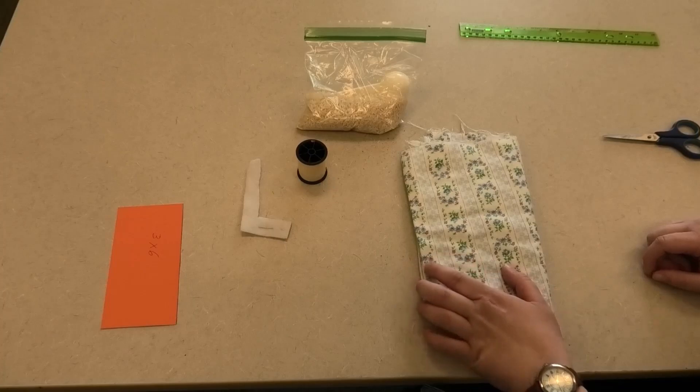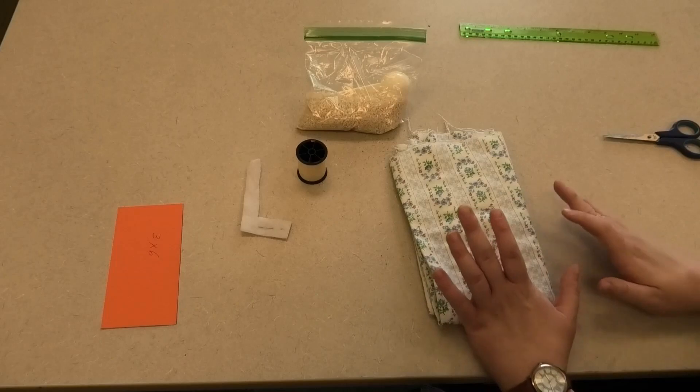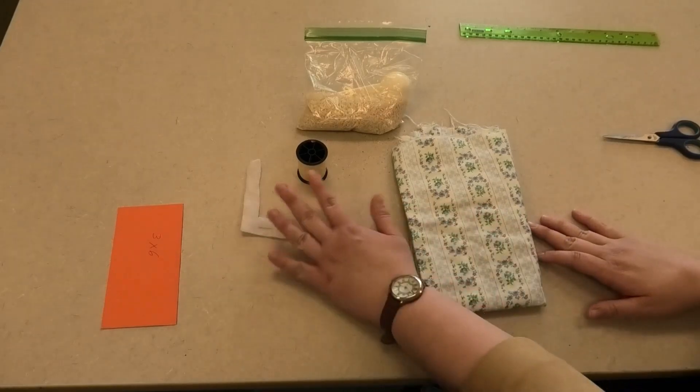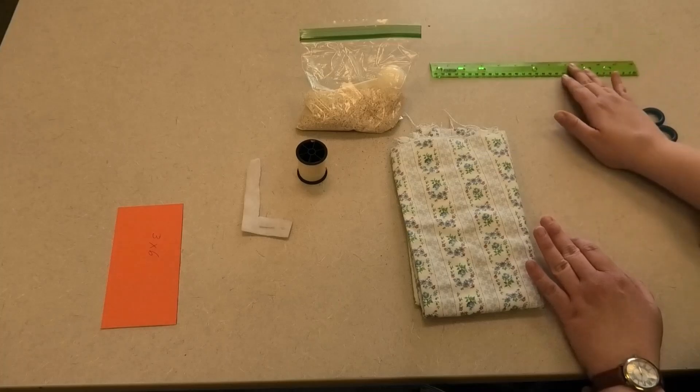So to start we're going to make our own rice pack. For this project you want to use material, needle and thread, uncooked rice, scissors, and a ruler.